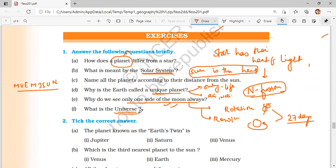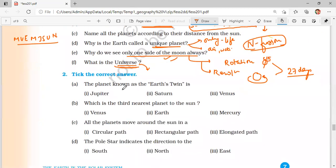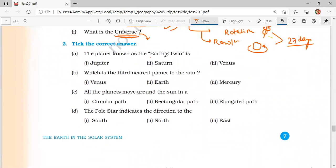What is the universe? Universe is a collection of billions of galaxies. Earth's twin? We all know Venus, because of its similar shape and size with respect to that of Earth. Which is the third nearest planet to the sun? Mercury, Venus, and then third is Earth.